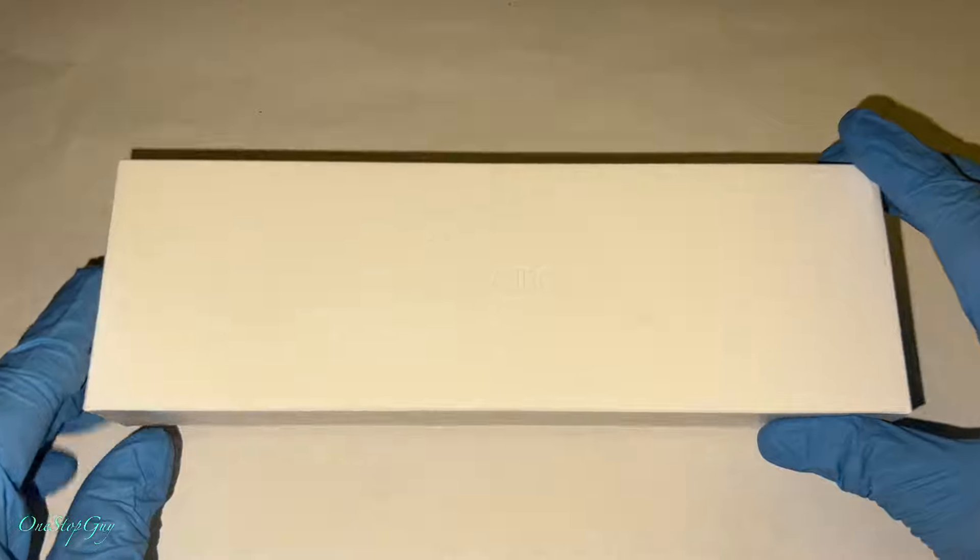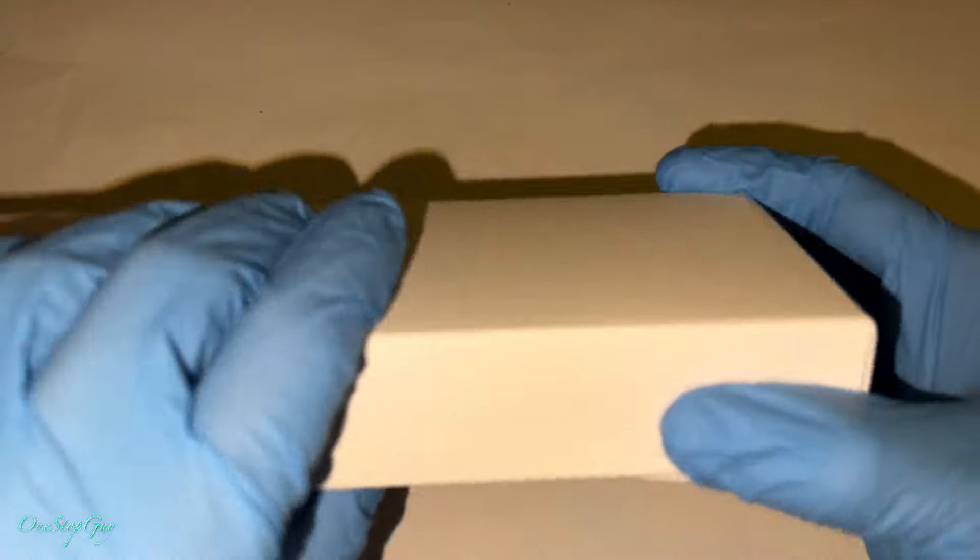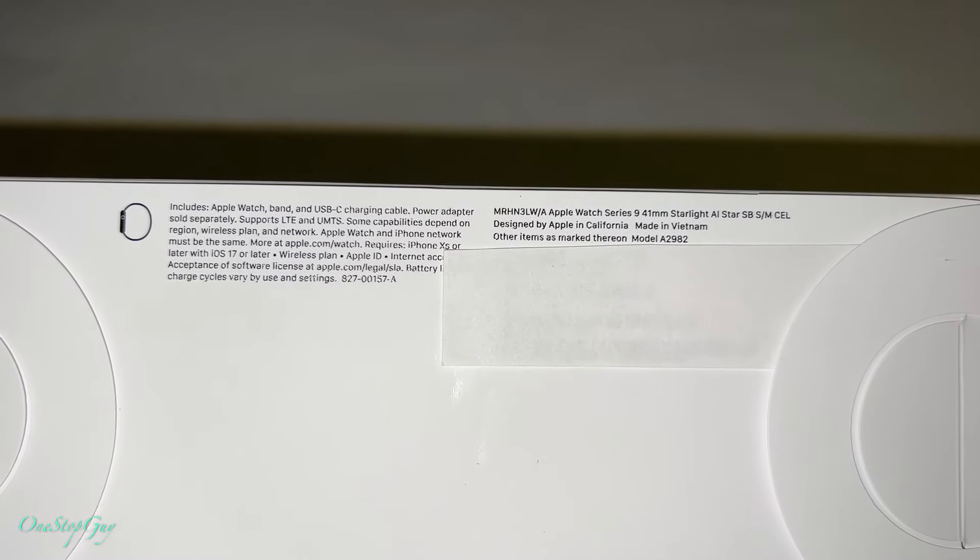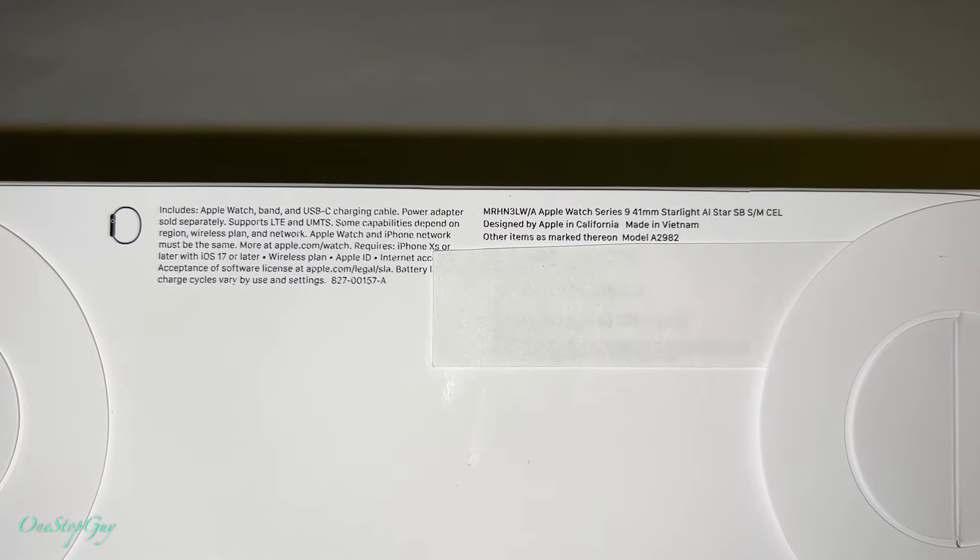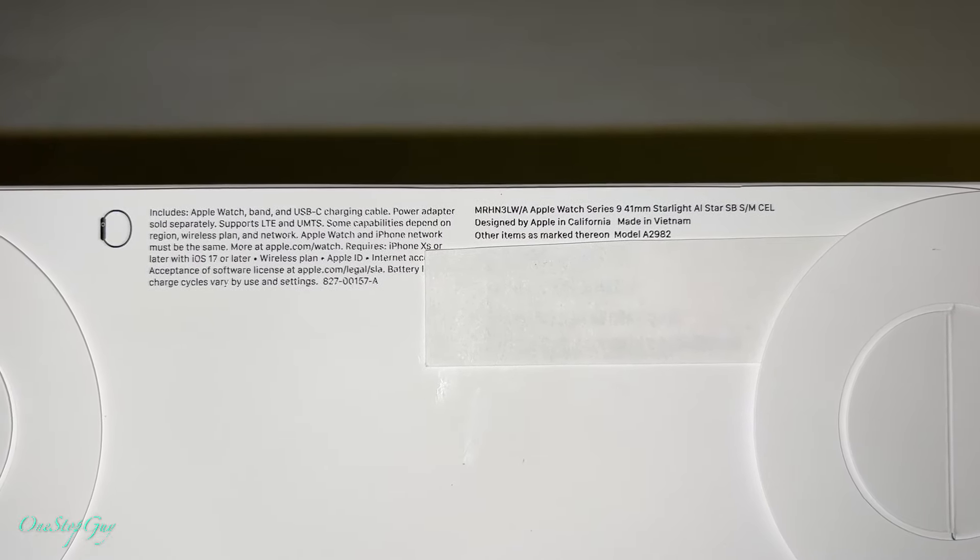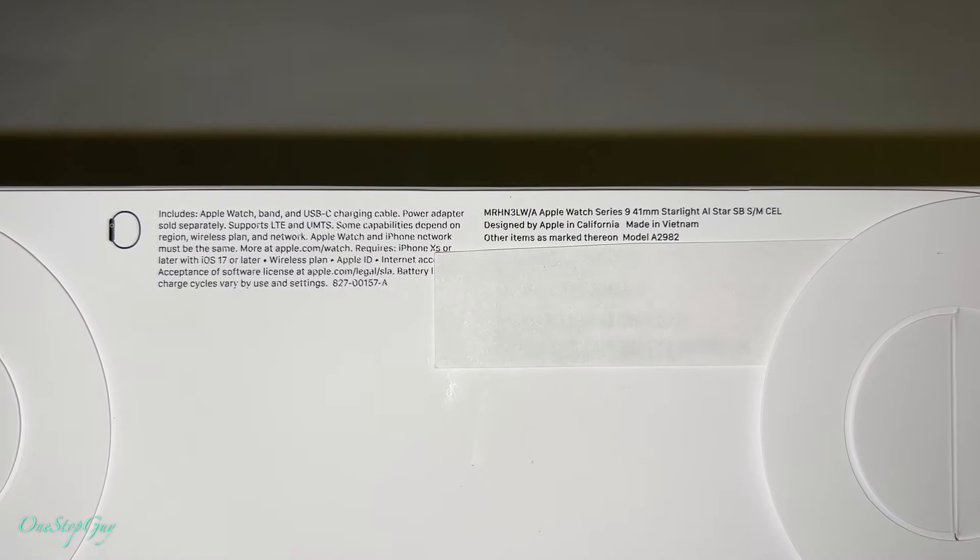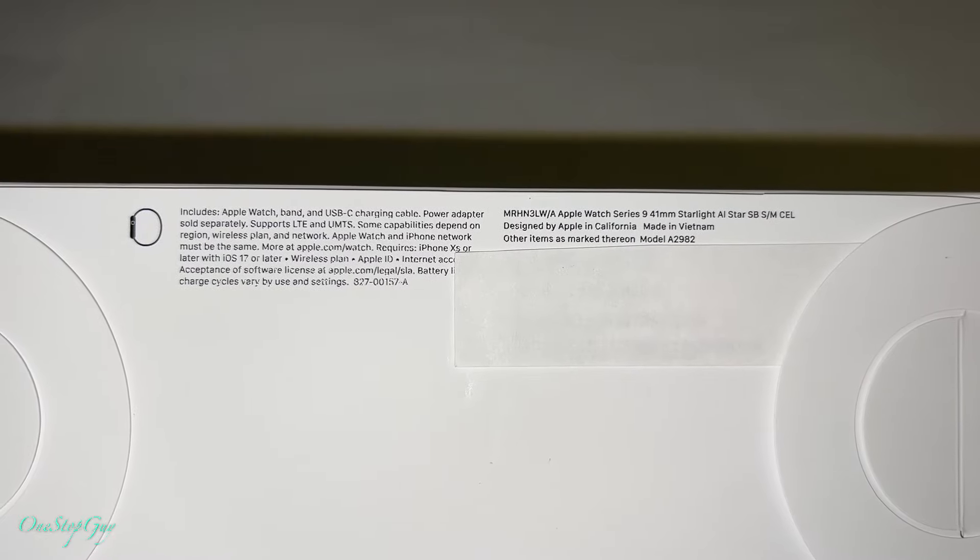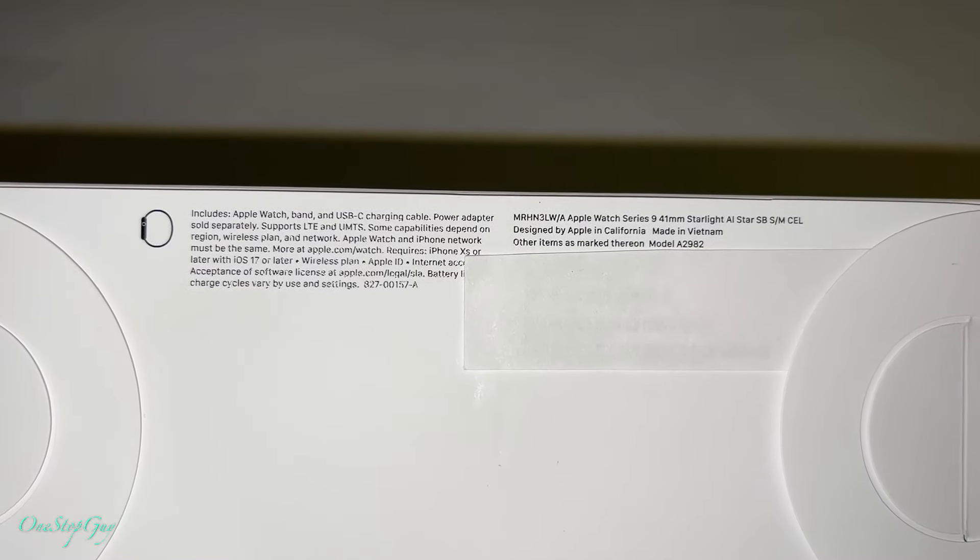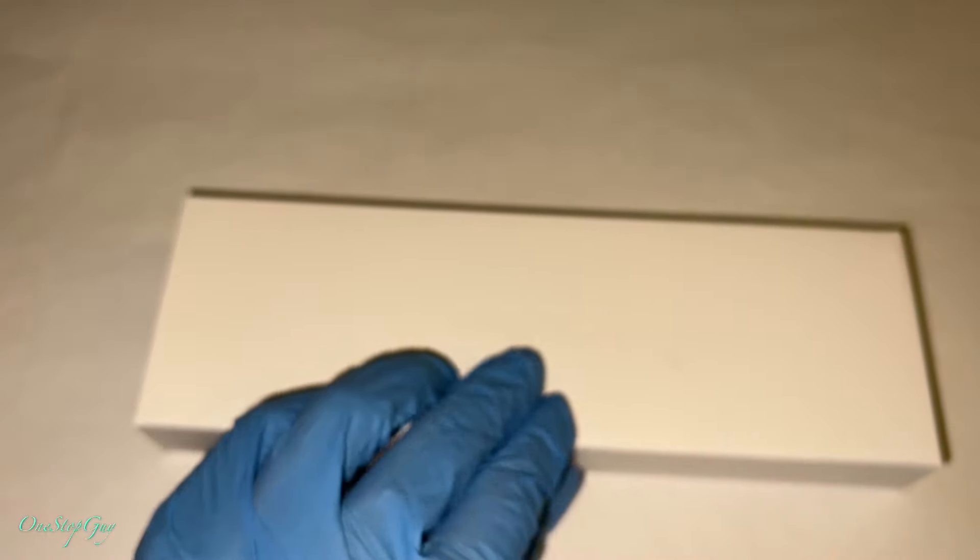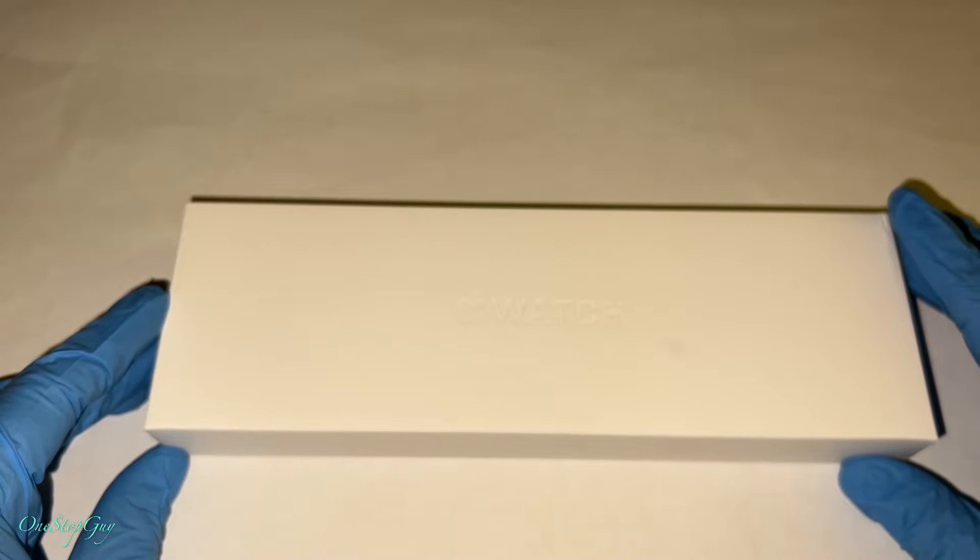Alright guys, so let's get started. Right in front of me, Apple Series 9, 41 millimeter, starlight color, so it's like a white color. On the left side it says include Apple Watch band and USB-C charging cable, power adapter sold separately. This is an LTE device, which means it can use its own cellular.